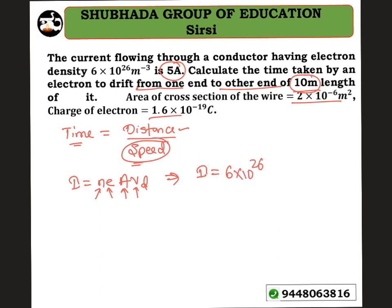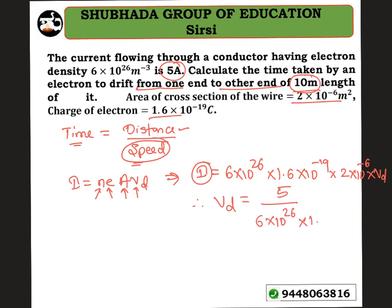Substituting the values: n = 6×10²⁶, e = 1.6×10⁻¹⁹ coulomb, and area A = 2×10⁻⁶ m². Therefore, V_D = I / (n·e·A) = 5 / (6×10²⁶ × 1.6×10⁻¹⁹ × 2×10⁻⁶). Simplifying, V_D = 0.0260 meter per second.